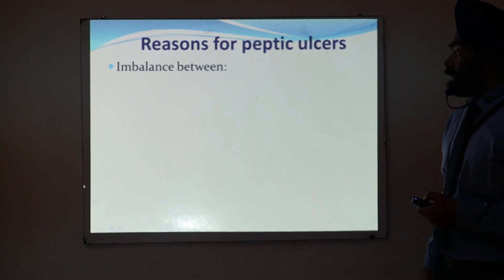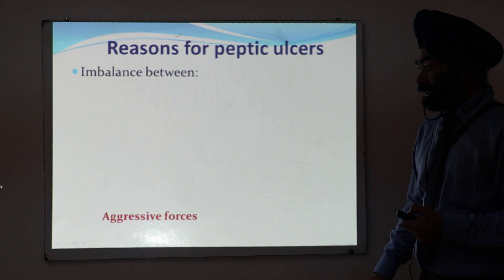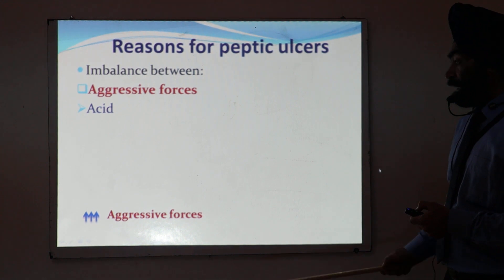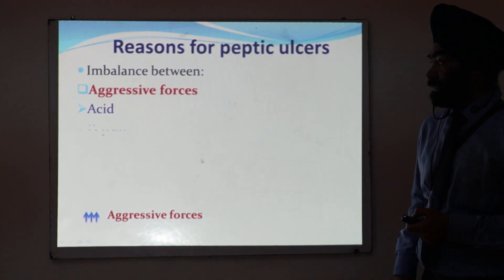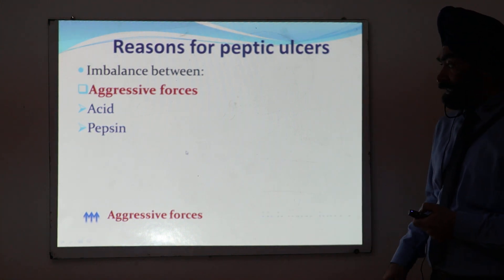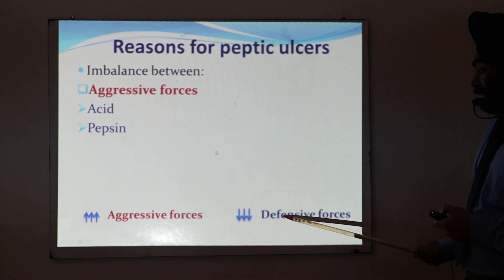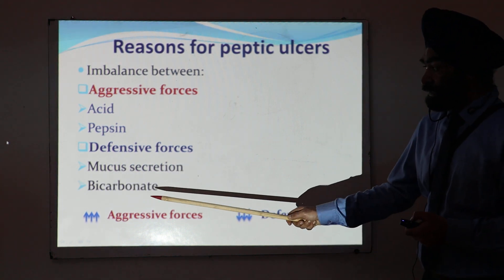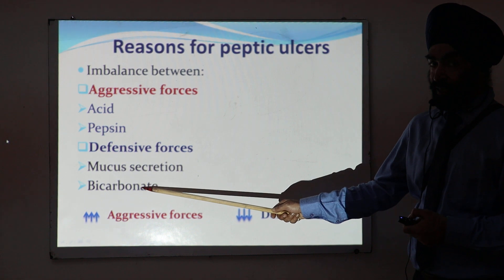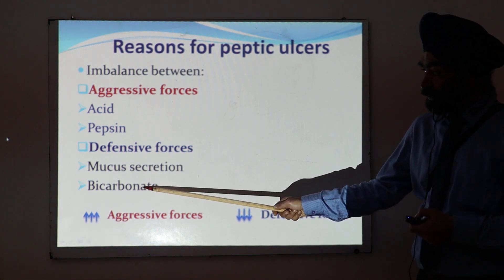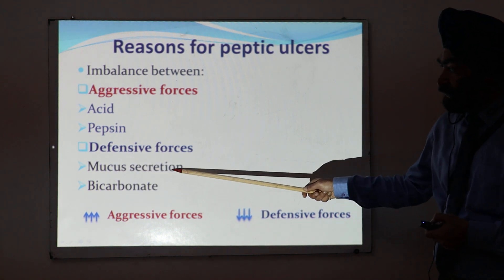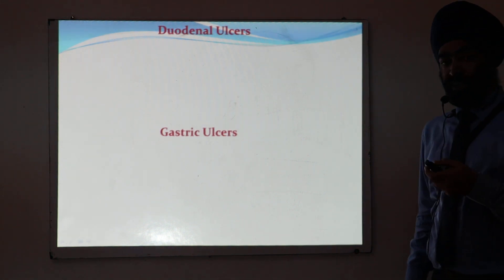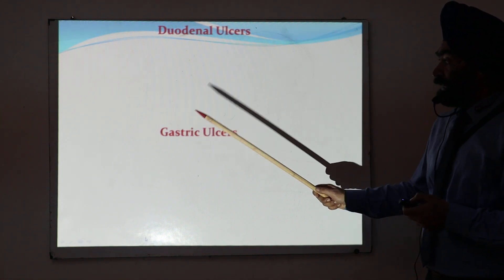So why does peptic ulcer occur? There is an imbalance between aggressive forces and defensive forces. Aggressive forces are increased — for example, increased acid or pepsin, which is a proteolytic enzyme. Or there is a decrease in protective forces such as bicarbonate, which is present on the layers of the GIT and neutralizes acid. So it is an increase in aggressive forces and decrease in protective forces.